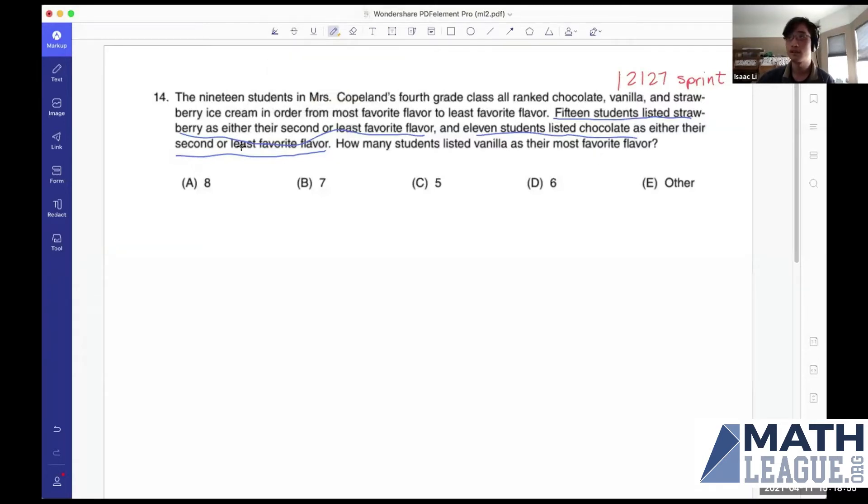Well, what does second or least favorite flavor mean here? It means that the students did not pick that flavor as their most favorite flavor. So we know that 15 students did not pick strawberry as their most favorite flavor, and 11 students did not list chocolate as their most favorite flavor. So we know for two of the flavors how many did not like them the most.